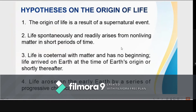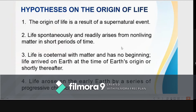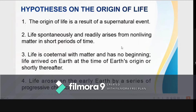Hypothesis one — the traditional contention of theology and some philosophy — is in its most general form not inconsistent with contemporary scientific knowledge, although scientific knowledge is inconsistent with a literal interpretation of the biblical accounts given in chapters one and two of Genesis and in other religious writings. Hypothesis two was the prevailing opinion for centuries. The most notable hypothesis in the second group is spontaneous generation.